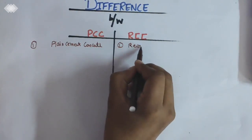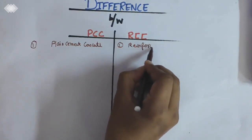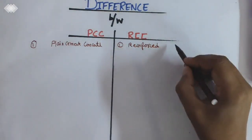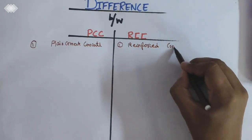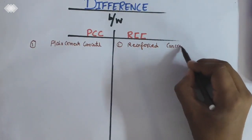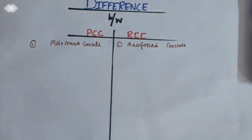For RCC, it means reinforced concrete. So PCC means plain cement concrete and RCC means reinforced concrete.